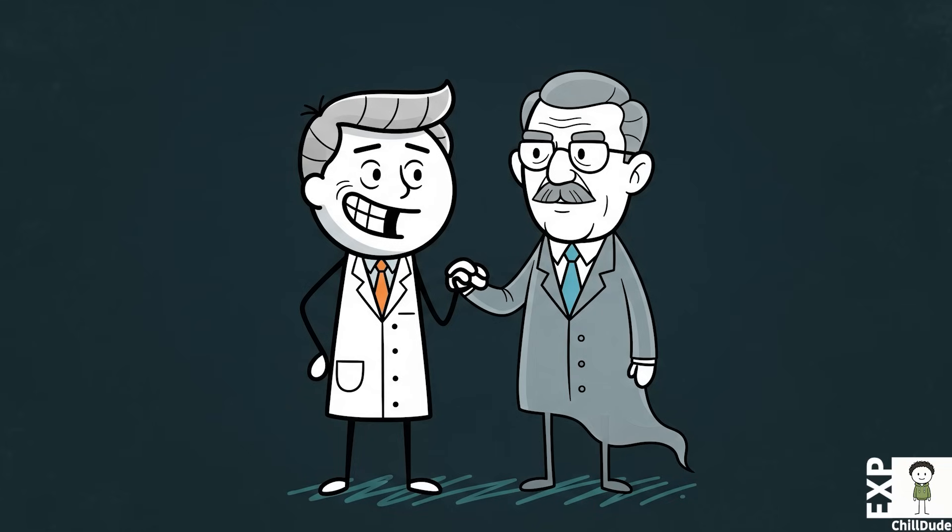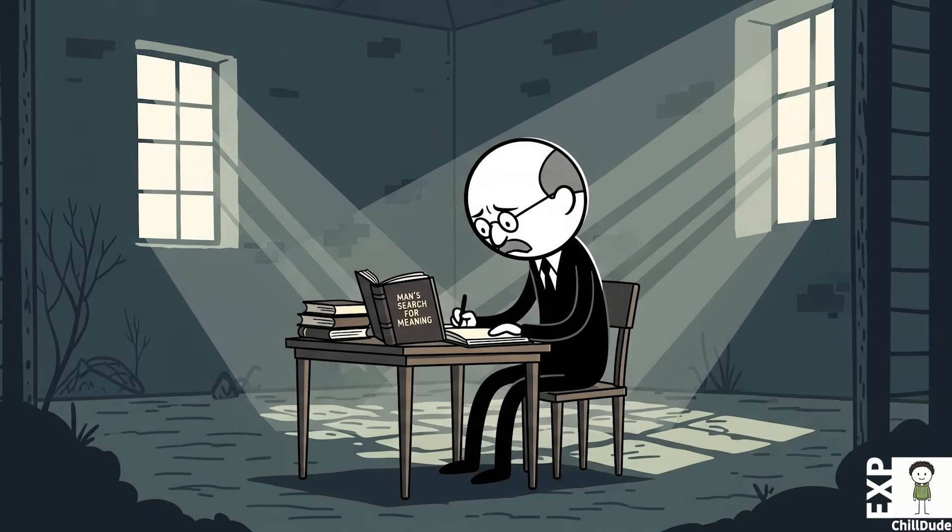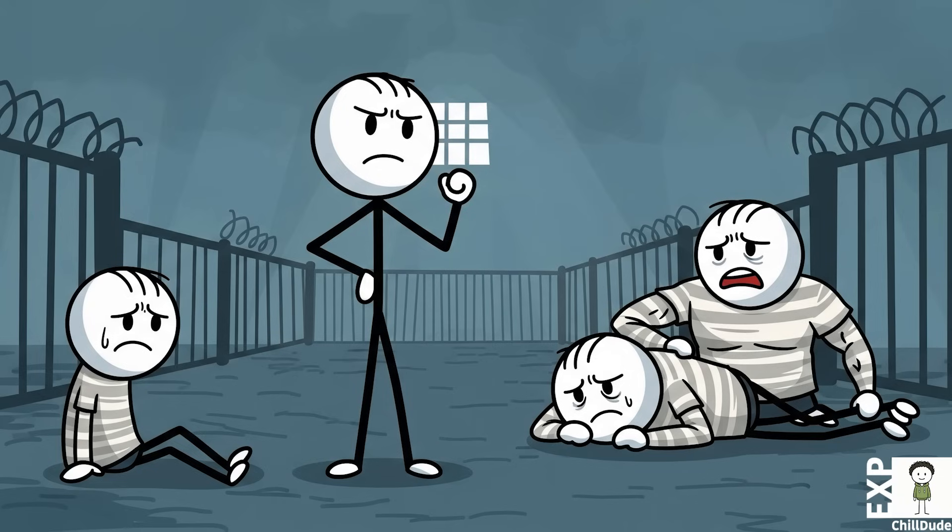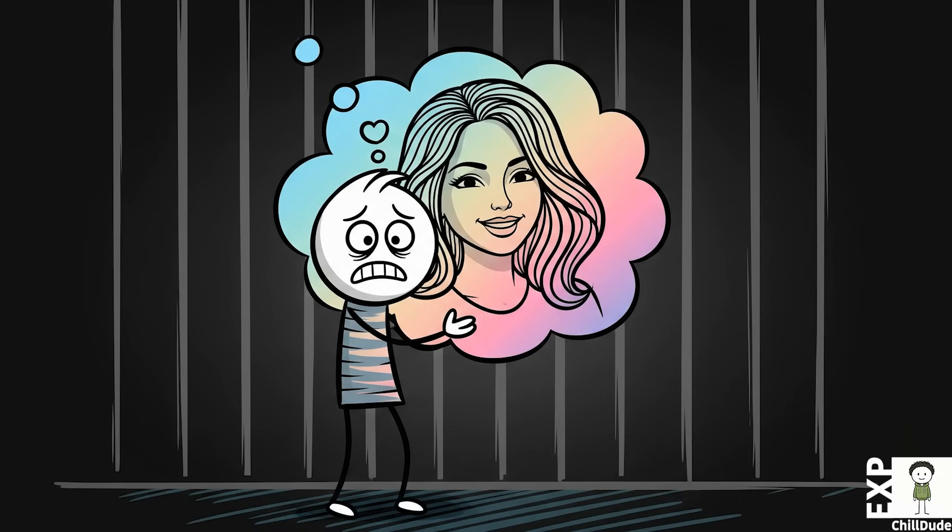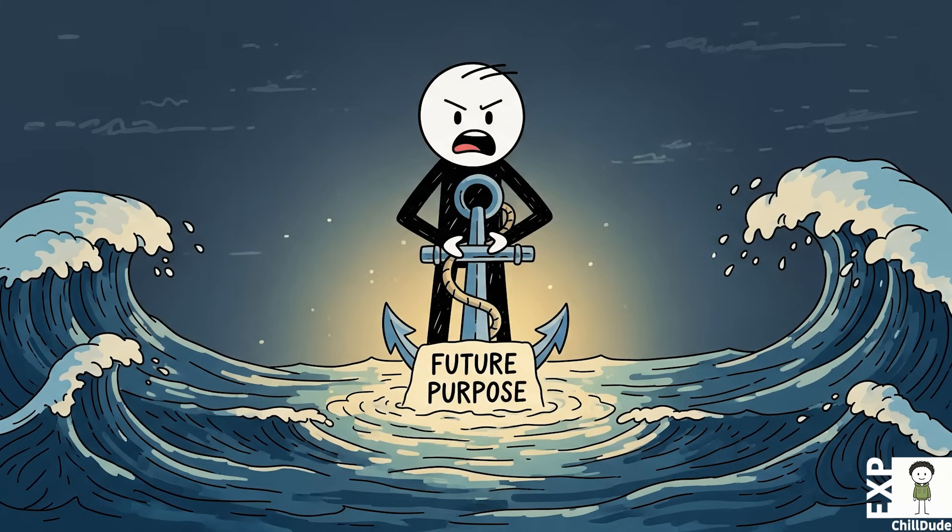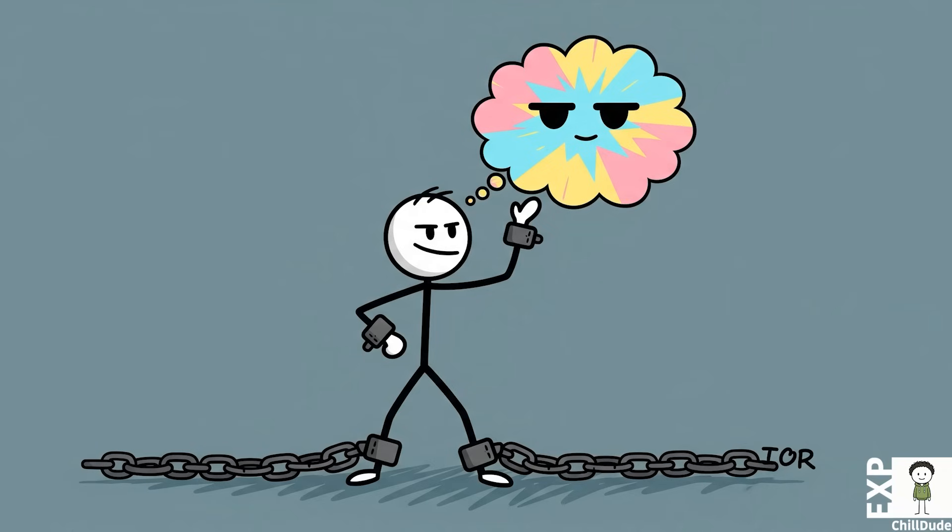This scientific finding gives a concrete neurological basis to the profound wisdom of psychiatrist and Holocaust survivor Viktor Frankl. In his seminal book, Man's Search for Meaning, Frankl observed that the prisoners in concentration camps who were most likely to survive were not necessarily the strongest physically, but those who managed to find a purpose—a reason to live beyond their suffering. Whether it was the hope of reuniting with a loved one, a scientific work to complete, or a spiritual faith to uphold, this sense of future purpose was the anchor that held them to life. They maintained their agency by choosing their attitude, even when all other choices were stripped away.